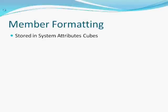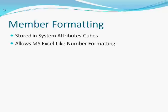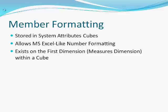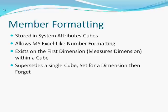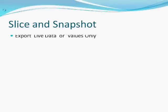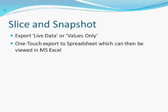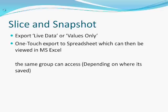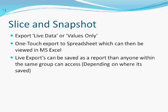Member formatting is stored in the system's attribute cube, per a dimension. This allows for Microsoft Excel-like number formatting, and it exists on the first dimension within a cube — per dimension, not per cube. This allows you to export live data or values to a spreadsheet. With one touch, they can be exported into Microsoft Excel and sent to colleagues. Live exports can be saved as reports within Keystone, and anyone within the same group can be given access to these.